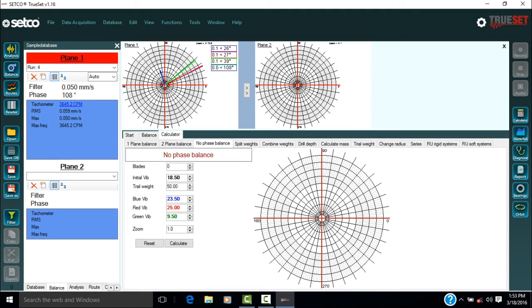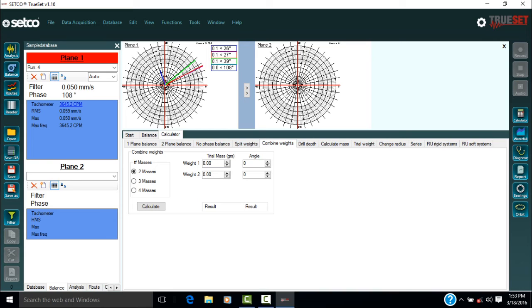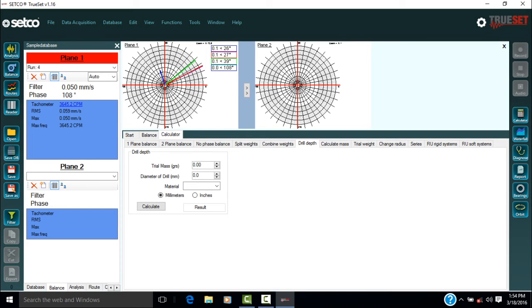The fourth tab is split weights. This is used when the required balancing weights are not achievable. The fifth tab is for combine weights, which is another option when the required balancing weights are not achievable. The sixth tab is drill depth. This is used when removing material for balancing.